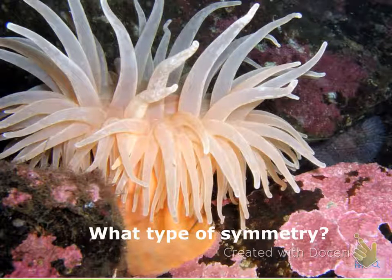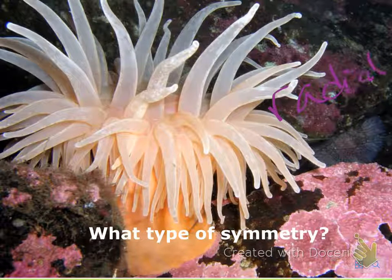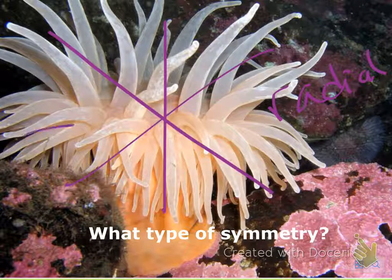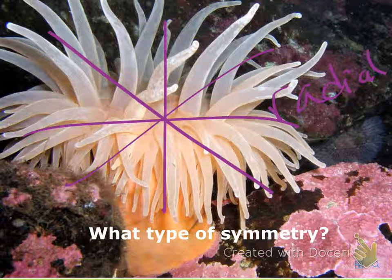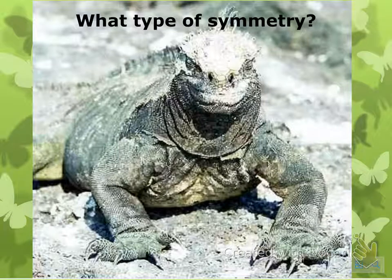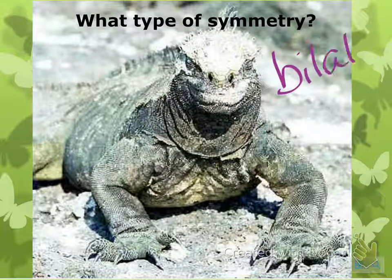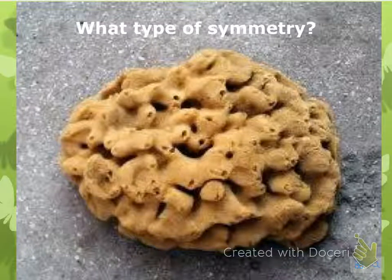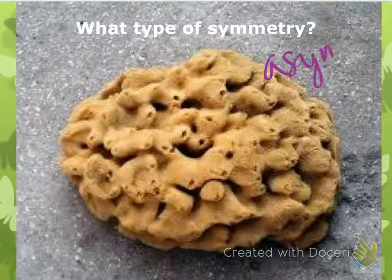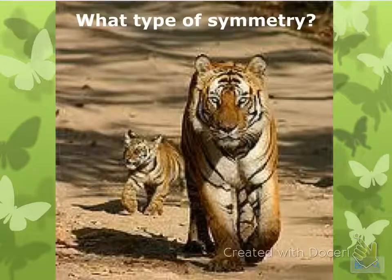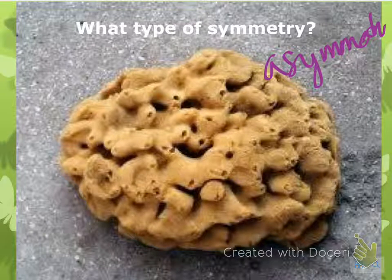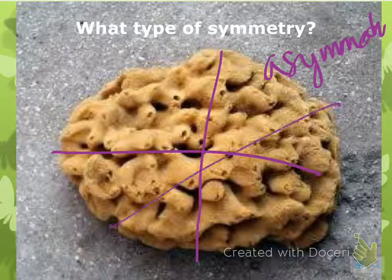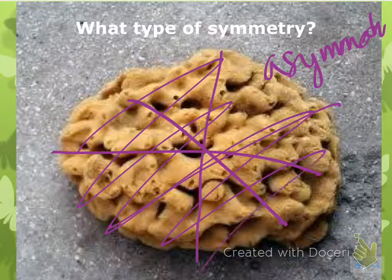Let's practice some symmetry. A sea anemone is going to be radial, because you could cut it this way, this way, this way — no matter which way you cut this anemone, it's going to be relatively equal on all sides. This next animal is bilateral — you would cut it right down the middle. And a sponge has no symmetry, or asymmetry, because no matter which way you cut it, it's not going to be symmetrical.